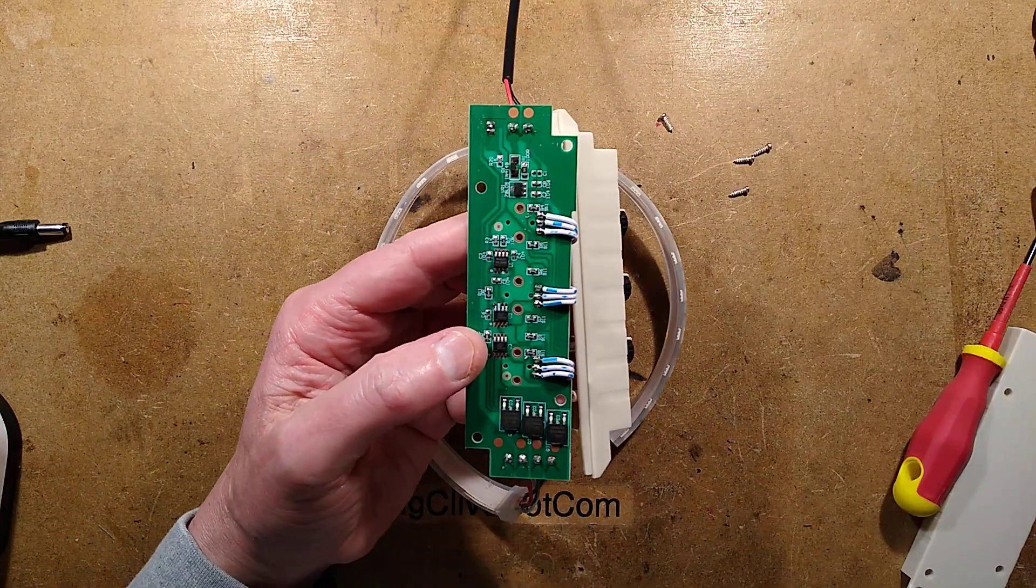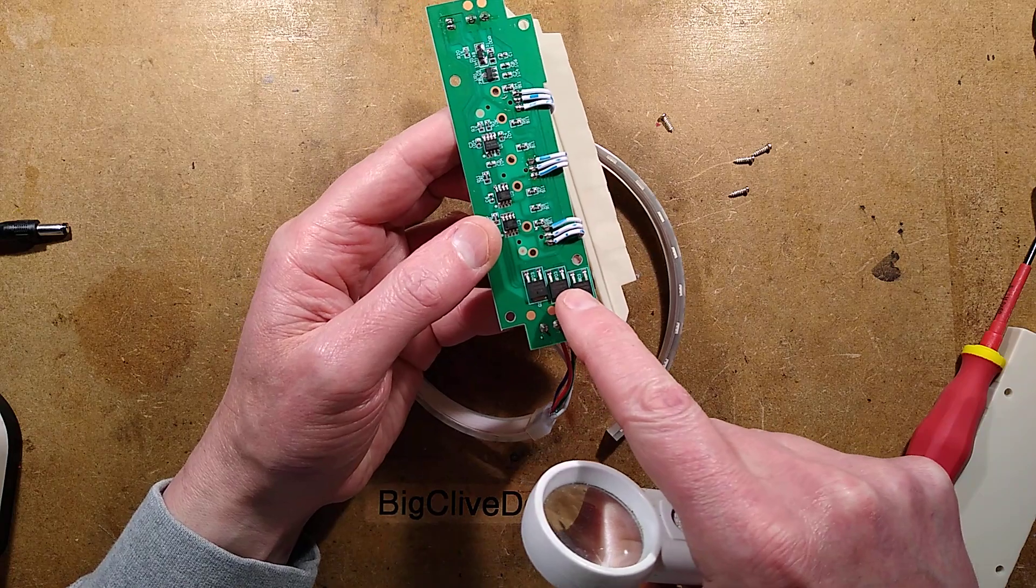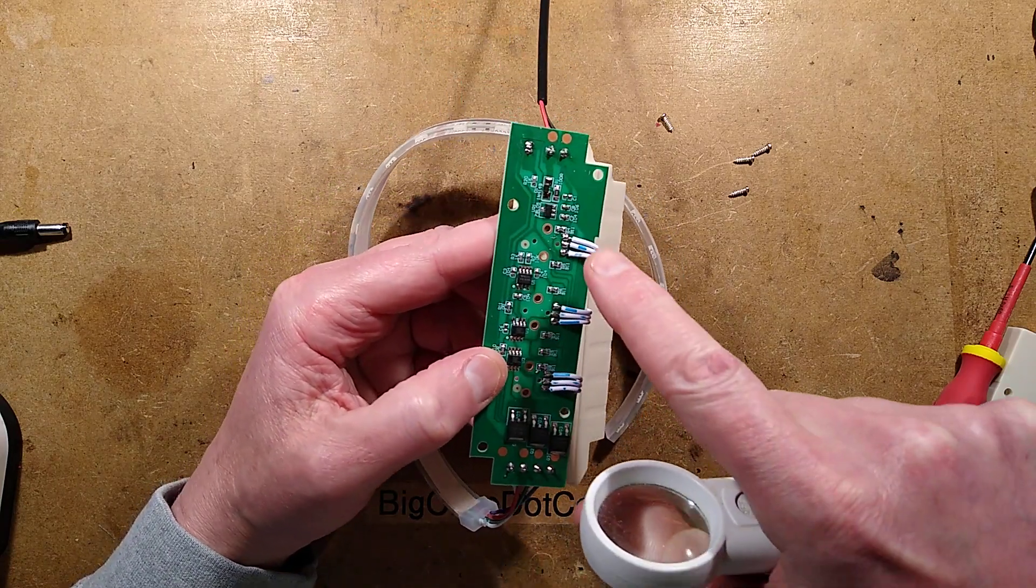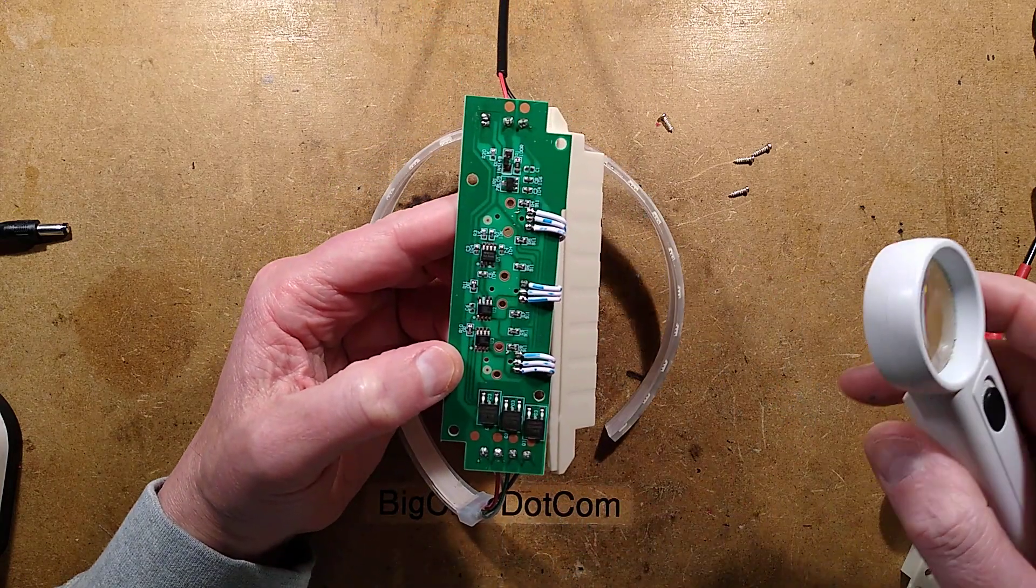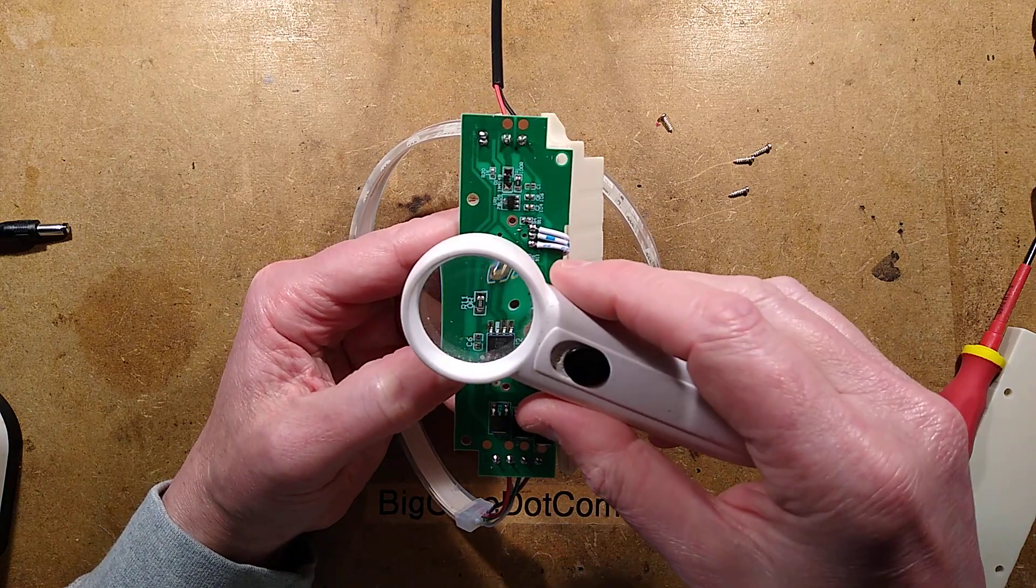What do we have here then? You guys can probably see this better than me. We have three big MOSFETs at the output. This is probably a voltage regulator.